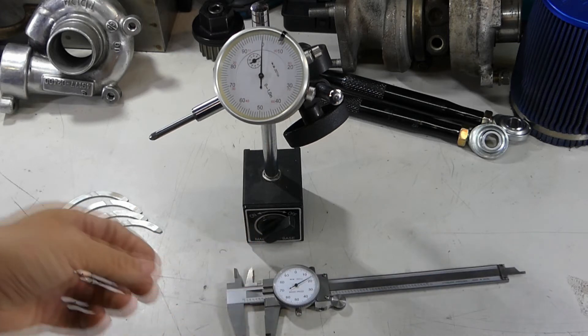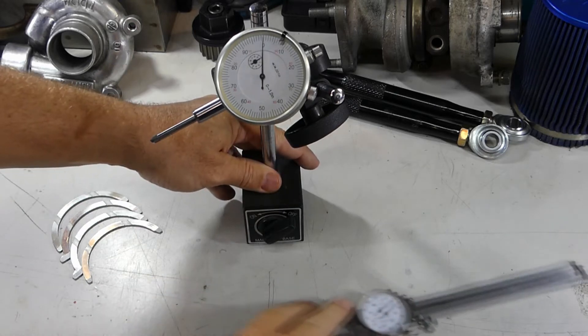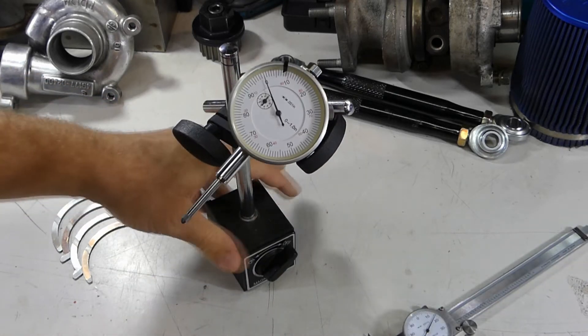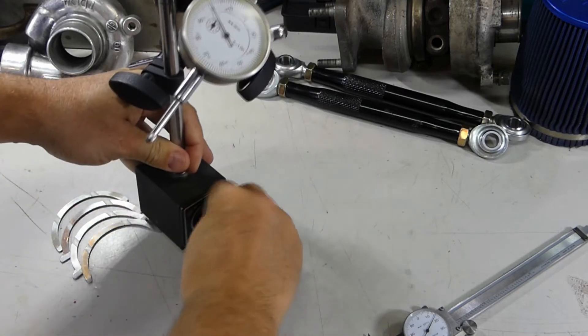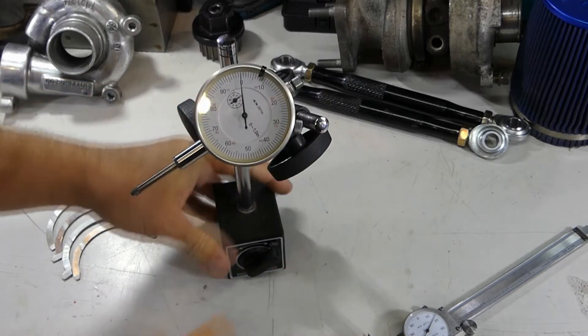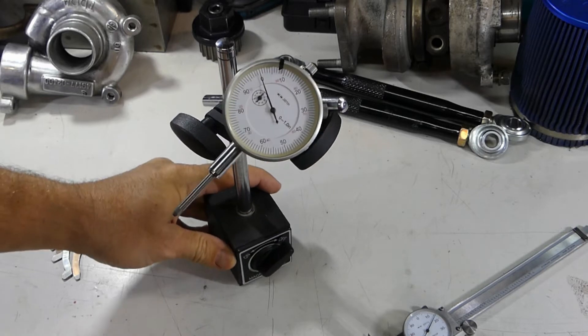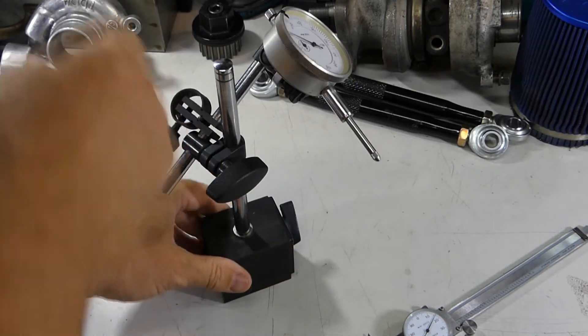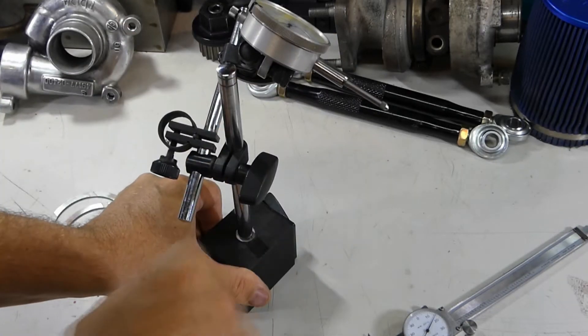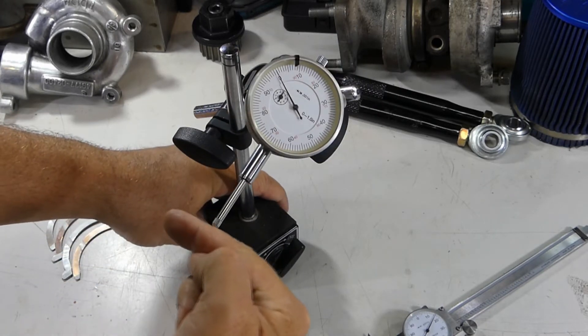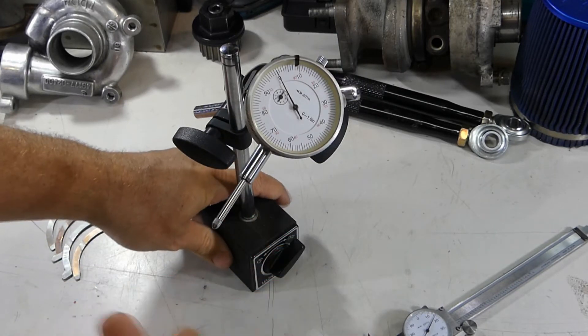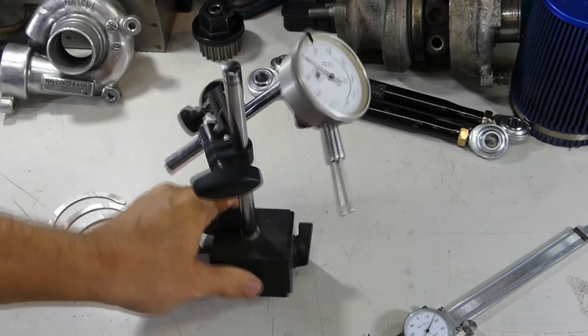This one happens to be a magnetic base, which is really kind of a nice little guy. You can turn this magnet on and off. You can attach it to the end of the block, move these two articulating points or even a third one here on the dial gauge itself, and move it right to the end of the crank. Then you can measure what kind of throw you get by prying the crank back and forth.